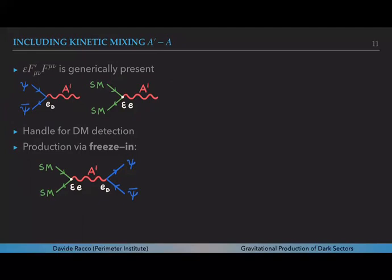Not only this, they also offer a production mechanism like freeze-in. This diagram allows for the leakage of some energy from the standard model into the dark sector. Even if this ε is tiny over cosmological amounts of time, you can get enough energy in the dark sector so ψ can be the dark matter.